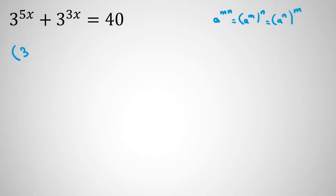We can write the equation in terms of 3 to the x. So, 3 to the x to the 5 plus 3 to the x to the 3 equals 40, and we consider 3 to the x equal to y.